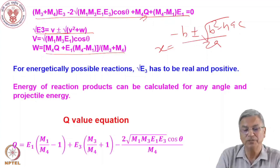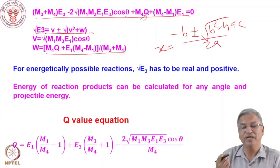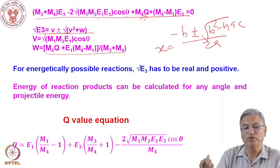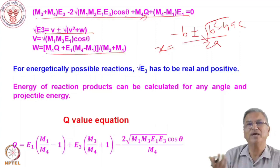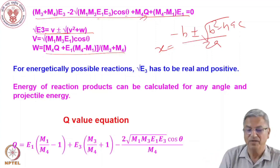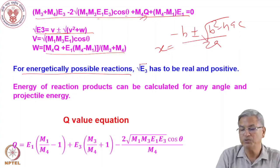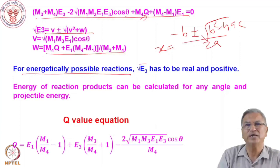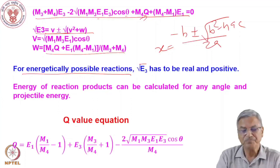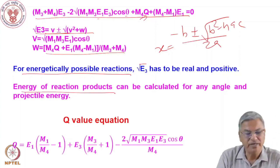This equation depends on the Q value, E1, and cos(theta). So if you want to find the energy of the ejectile E3 at a particular angle for a particular projectile energy, you can use this equation irrespective of the mechanism. It is valid for elastic scattering, inelastic scattering, direct reaction, or compound nuclear reaction. For the reaction to be energetically possible, root(E3) must be real and positive; imaginary or negative roots are ruled out. Based on this equation, you can calculate the energy of reaction products for any angle and projectile energy.